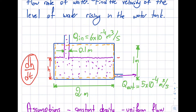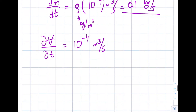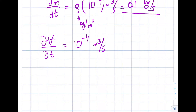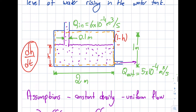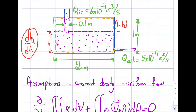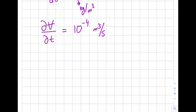I'll need the height expression (1 − h) for the pipe section, so let me note that. Now let's write the total volume. I'll neglect the effect of the air above the water surface — it won't change the analysis. I'll call the water volume V1 and the pipe volume V2, and sum them. So I write ∂/∂t of (V1 + V2) = 10⁻⁴.